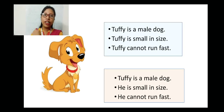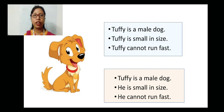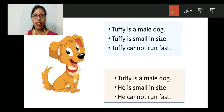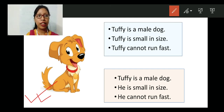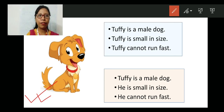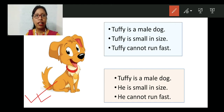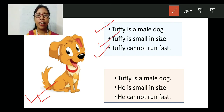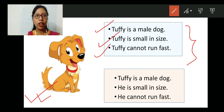Now let's move to the next one. If you look at the screen, you will see this is a dog. In the previous lesson we read a story about Tommy and Tuffy. I am taking an example of Tuffy. This is a dog whose name is Tuffy. Tuffy is a male dog. Tuffy is small in size. Tuffy cannot run fast. In these three sentences, we are using the word Tuffy again and again.